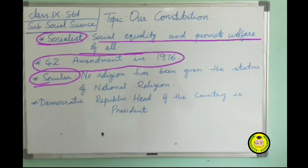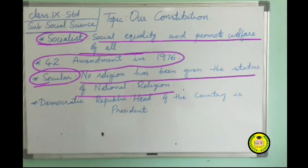Next, it is Secular. The word 'secular' has been incorporated in the Indian Constitution through the 42nd Amendment in 1976. No religion has been given the status of a national religion, so India is a secular country. Citizens have the liberty to practice any religion they desire, and all religions have equal status in India.